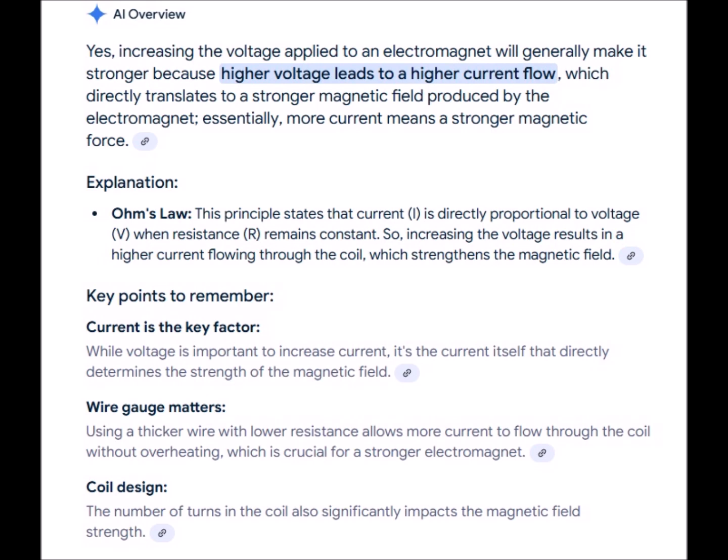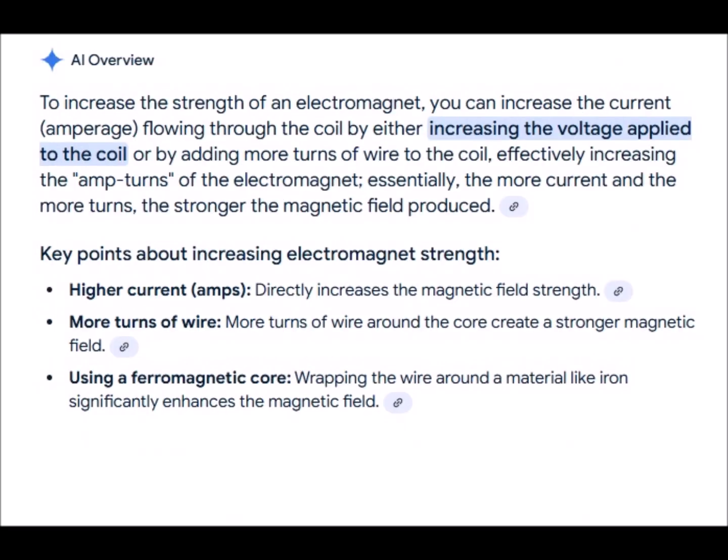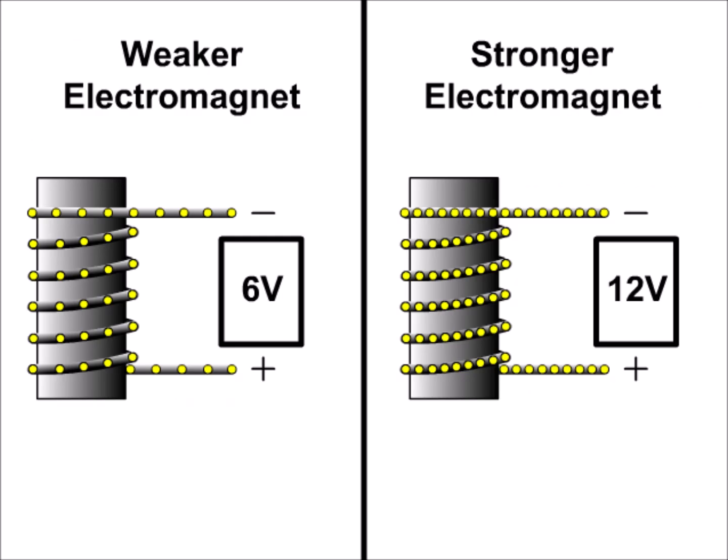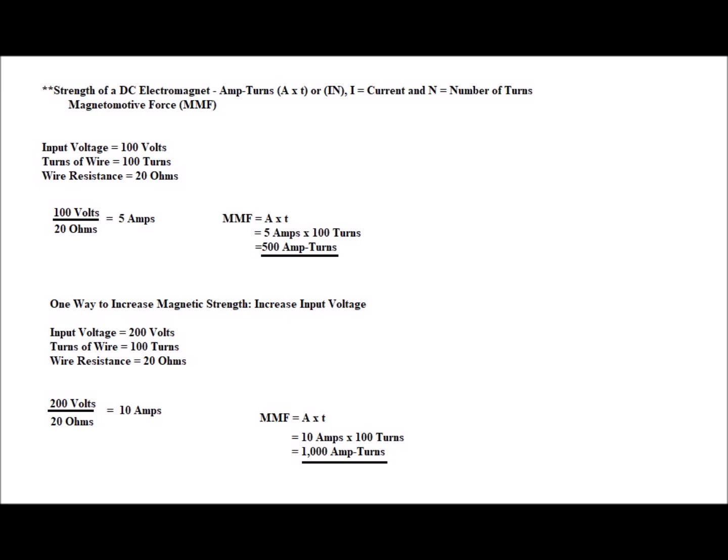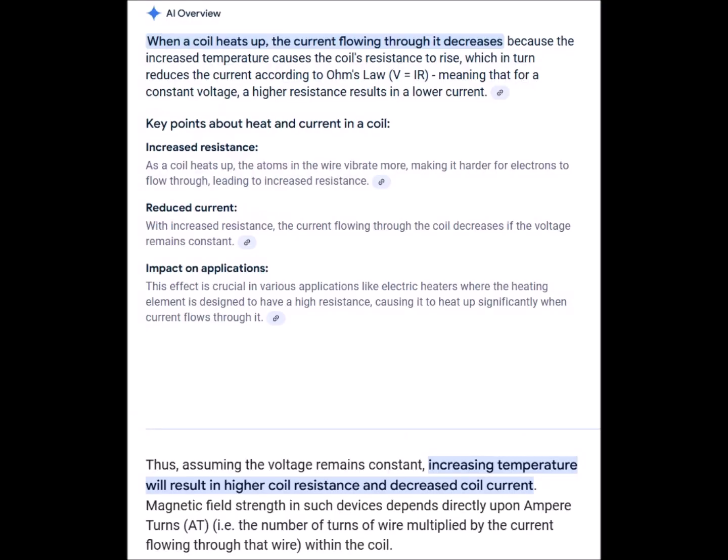In DC electromagnets and solenoids we know that we can enhance the field strength by increasing the input voltage which in turn increases circulating current. Though the increase in current does increase the resulting field strength, there's usually an accompanying increase in ohmic heating. Therefore increasing the voltage, for example doubling it, might not necessarily double field strength as some of the energy will be lost.